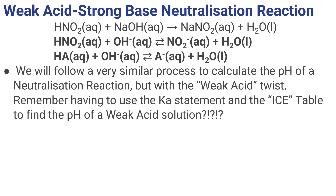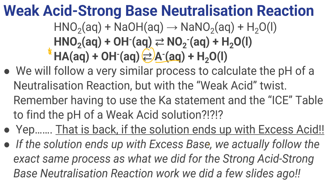That also throws off our acid-base titration math. Our new net ionic equation now has equilibrium involved, and conjugate base is present, which throws off our pH. You're thinking — wait, we're going to have to deal with ICE tables again? And not only ICE tables, but maybe even the Henderson-Hasselbalch equation. Unfortunately, if we go through these same five steps and the acid is in excess, then all of that ICE table work we did for weak acids, or maybe even buffers, comes back.